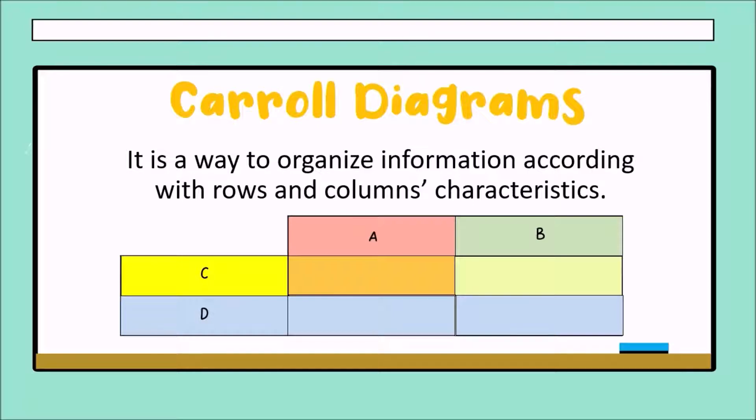Between D and A, we have to put the information here. And finally, the information that is D and D, we have to put that information here in this part of the Carroll diagram.